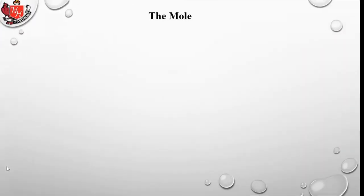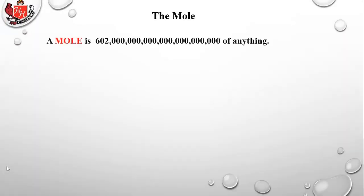First, you have to understand the concept of a mole. A mole is a number — just a number — like a dozen means 12. The word 'mole' means that number. It could be of anything: you could have a mole of pizzas, a mole of cars, or a mole of anything you want, just like a dozen.